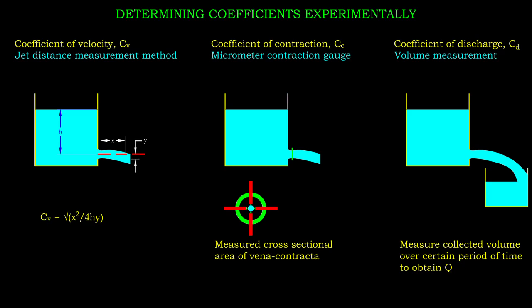To determine the coefficient of contraction, we need to measure the cross-sectional area of vena contracta. This can be achieved by using a micrometer contraction gauge. Another way to determine cc is by dividing cd by cv after knowing both of these coefficients.